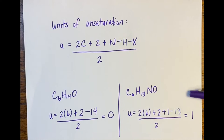For a second example, C6H13NO: plugging in — (2 × 6) + 2 + 1 nitrogen − 13 hydrogens, all divided by 2 — gives an unsaturation of 1. That means there is 1 ring or 1 pi bond in the structure.